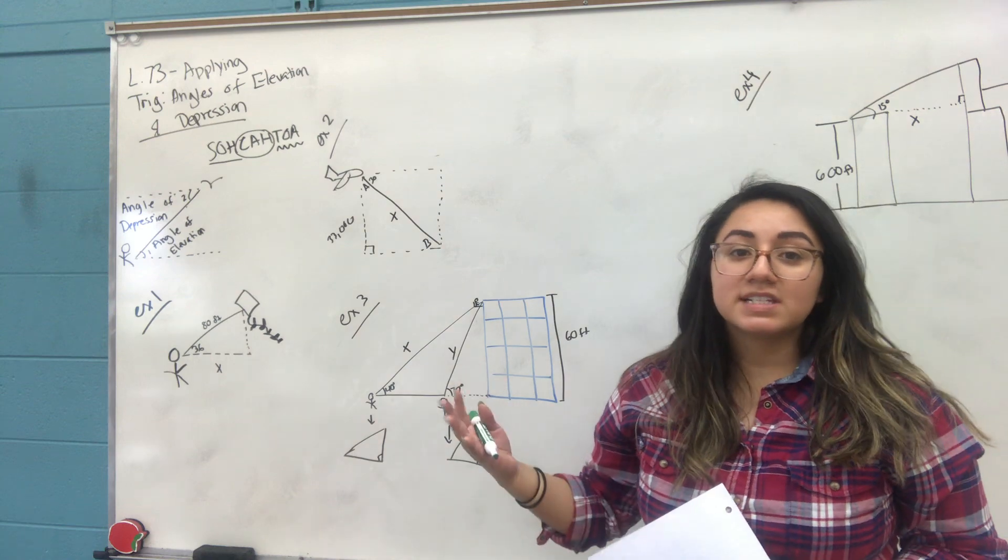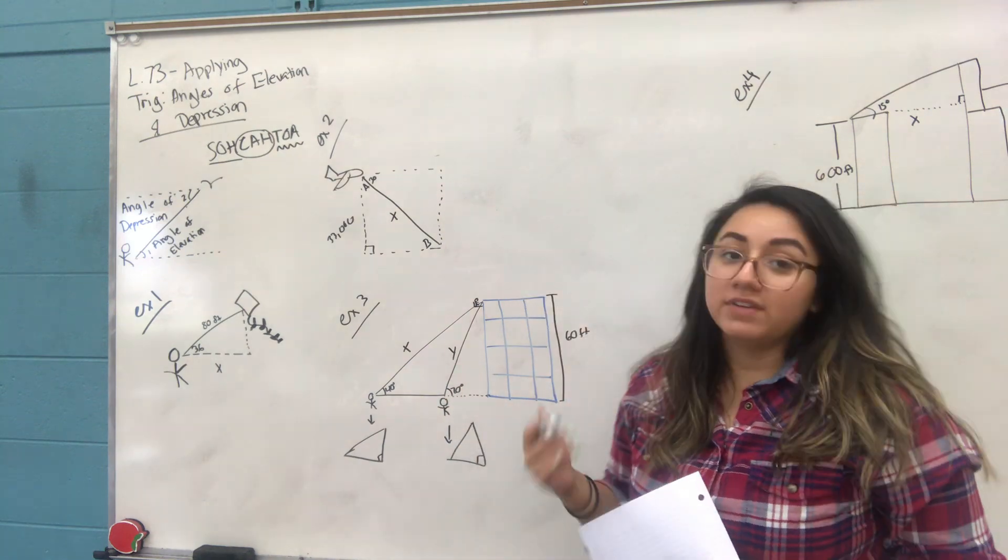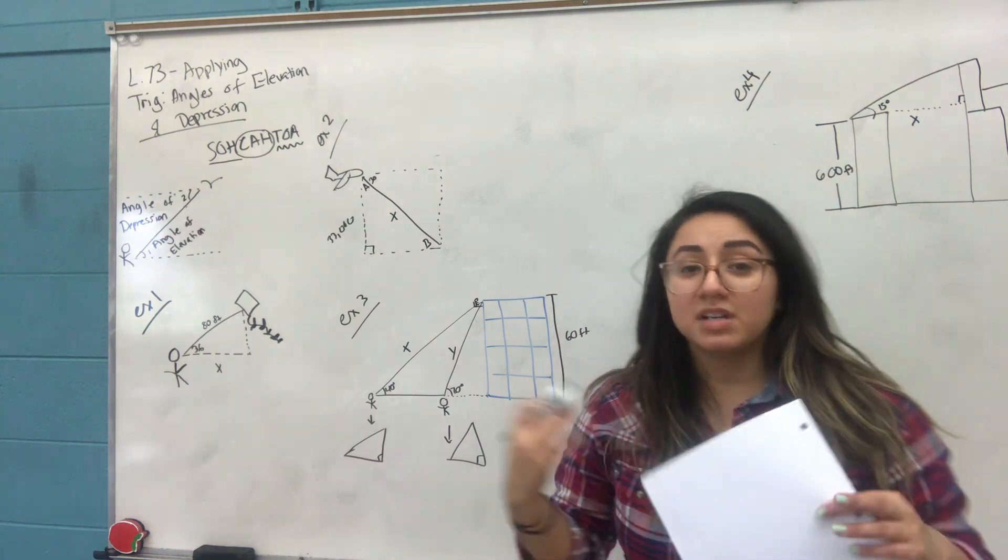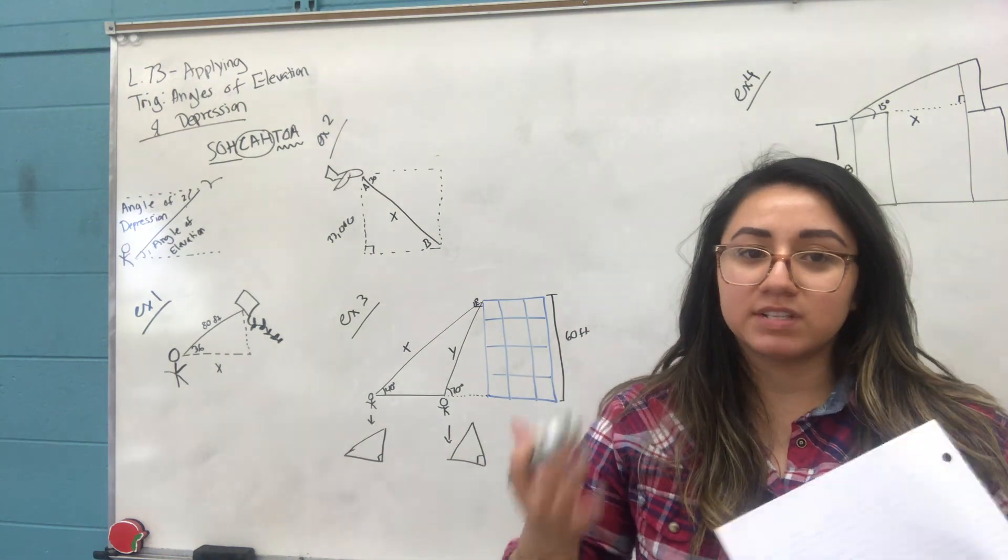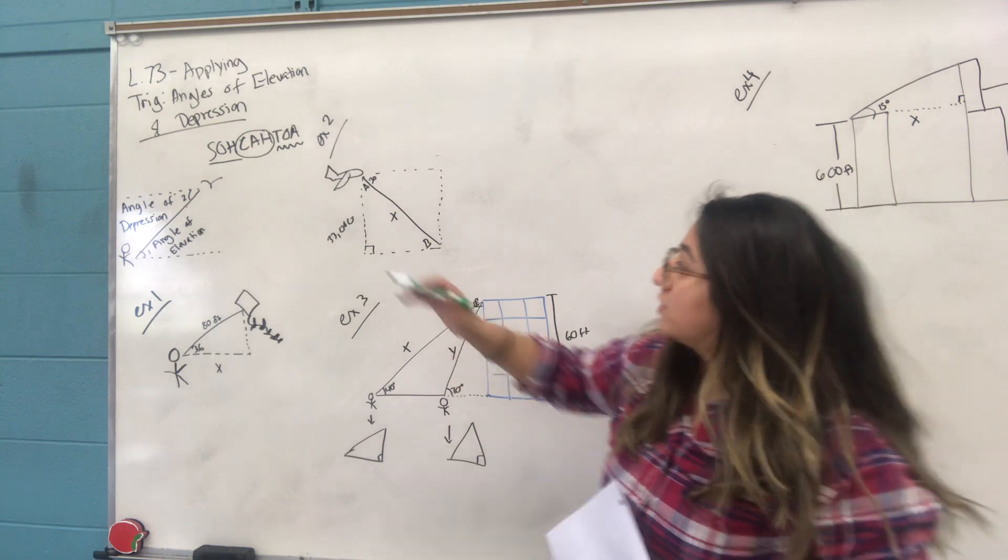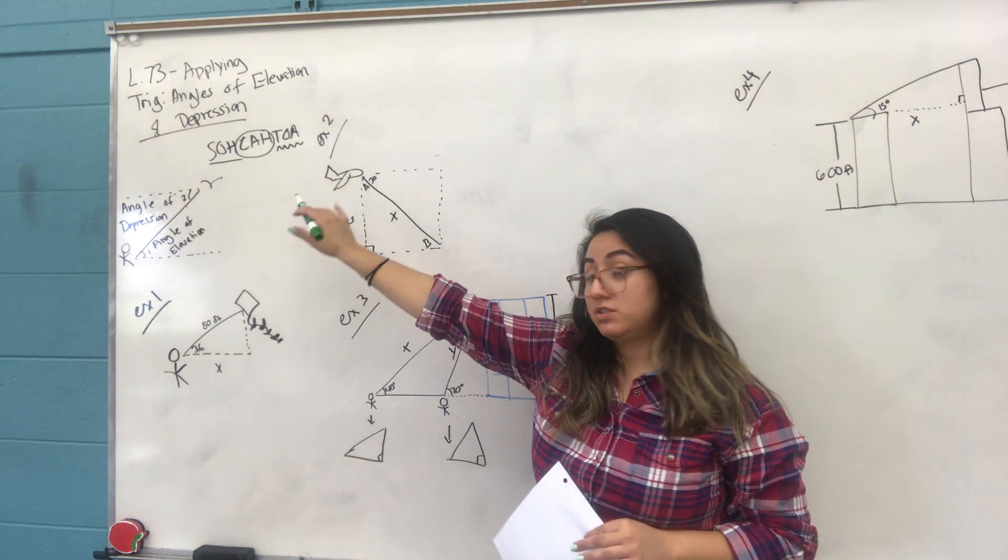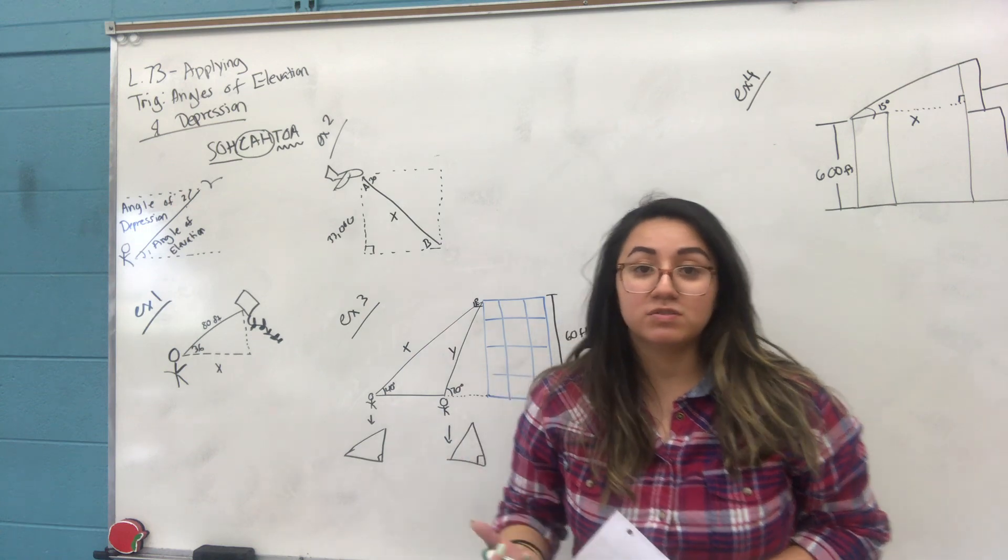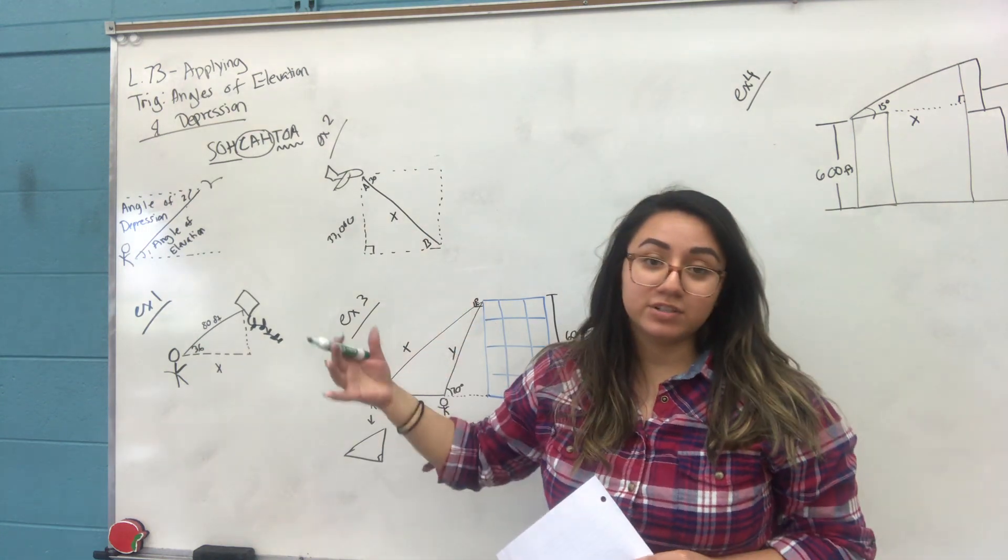We're dealing with angles of elevation and depression, so this is all strictly word problems. But once you draw it out, it's all triangles and these are all right triangles too. To understand trig and use those trig functions, they have to be right triangles. If they are not right triangles, you cannot use sine, cosine, and tangent.